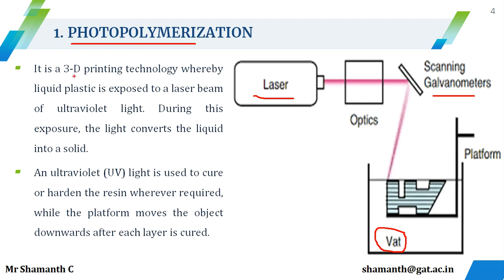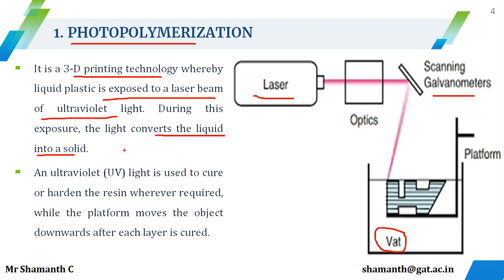Photopolymerization is a 3D printing technology whereby a liquid plastic is exposed to a laser beam. A photopolymer is taken and exposed to a laser beam of ultraviolet light; during this exposure the light converts the liquid into a solid. You can search about photopolymers to get more information — there are different types of photopolymers used — and understanding photopolymers will help you understand the photopolymerization process very well.